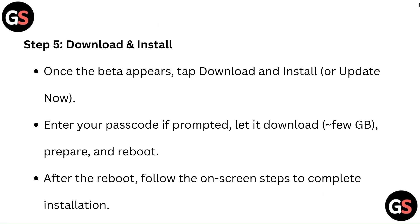Step 5: Download and Install. Once the beta appears, tap Download and Install, or Update Now. Enter your passcode if prompted. Let it download — it will be a few GB. After the reboot, follow the on-screen steps to complete installation.